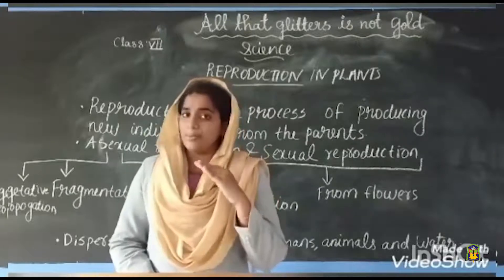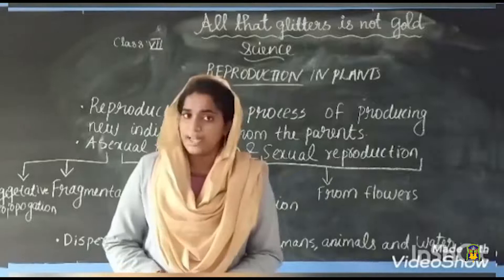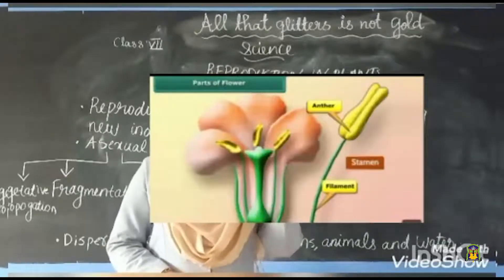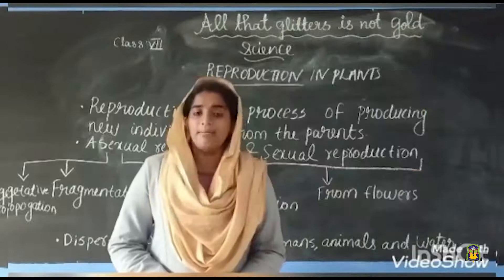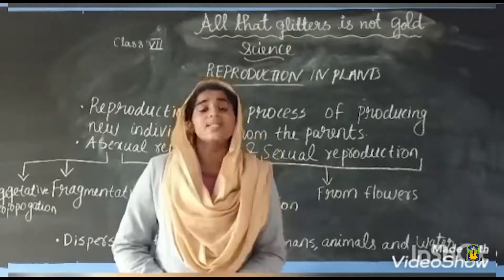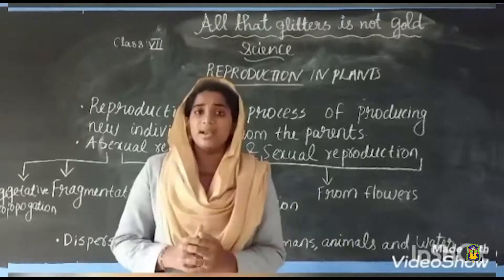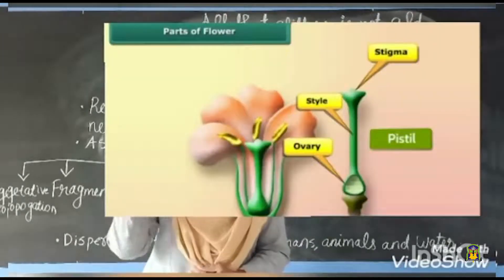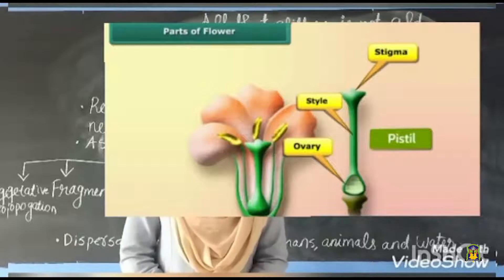Stamen is the male reproductive part and the pistil is the female reproductive part. Stamen consists of two parts: the anther and the filament. The anther contains pollen grains. The pistil consists of three parts: stigma, style, and ovary.